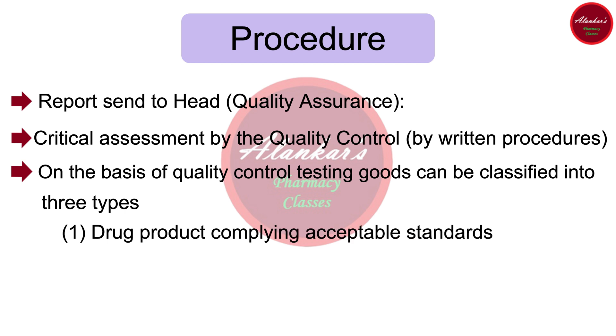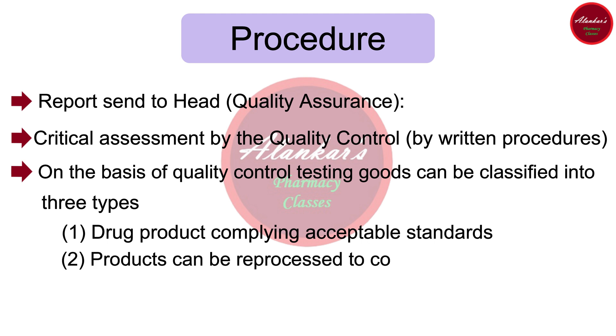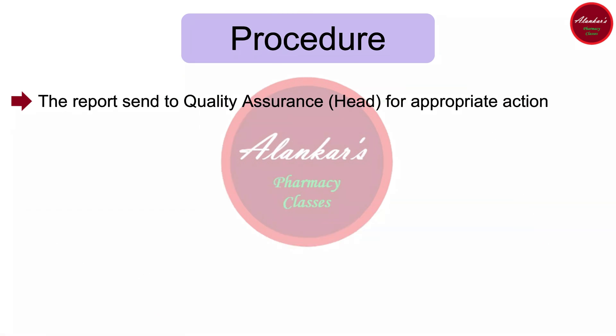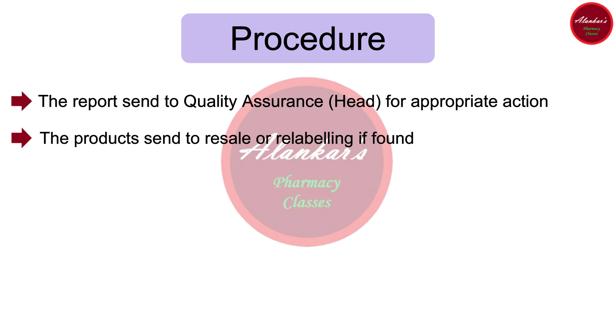On the basis of quality control testing, goods can be classified into three types: there may be a drug product that complies with all acceptable standards or specifications; there may be a case where the product can be reprocessed to comply with standards; and thirdly, the product may fail all specifications — in simple words, there may be unacceptable products. After this, the report is sent to the Quality Assurance Head for appropriate action.